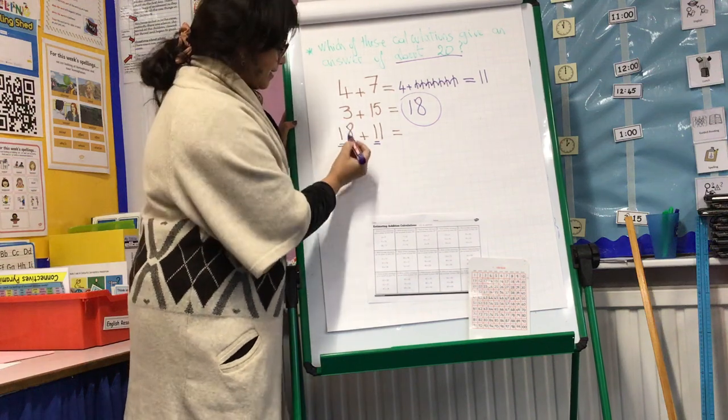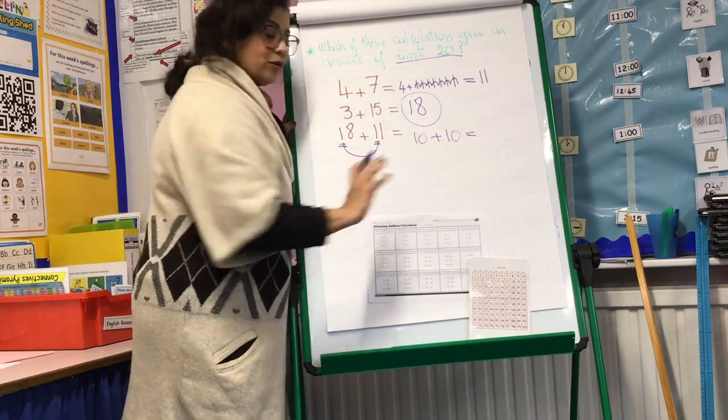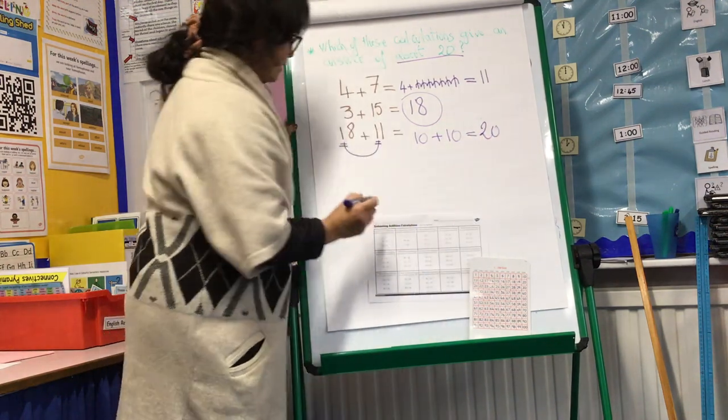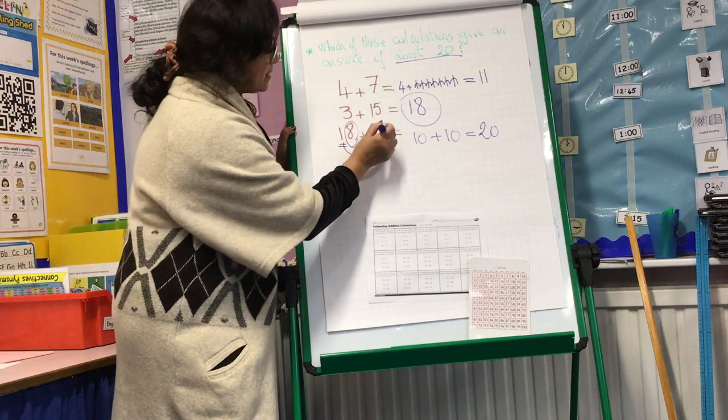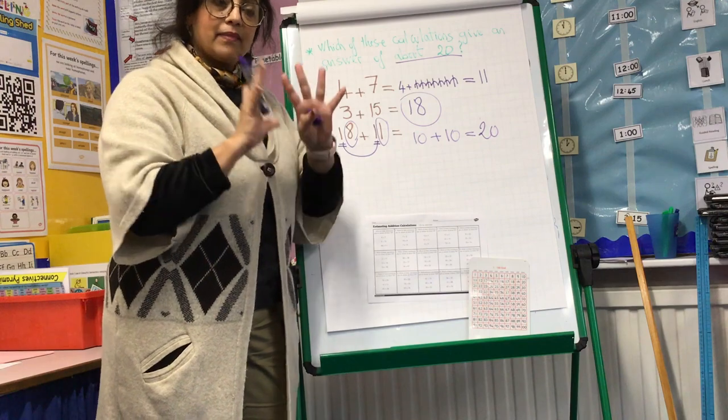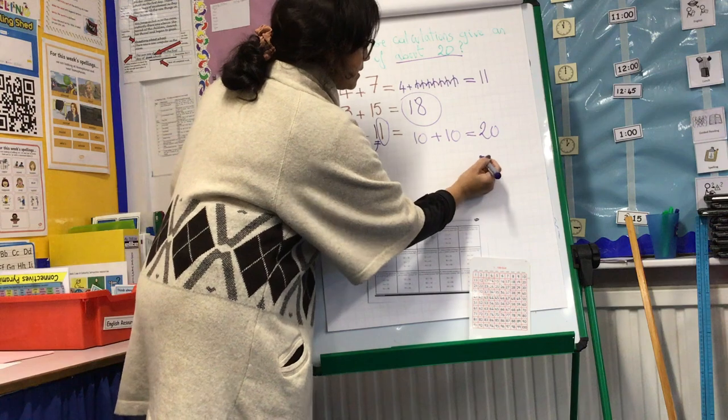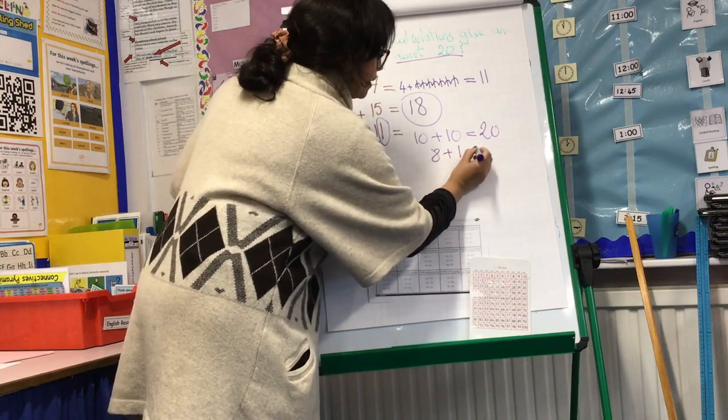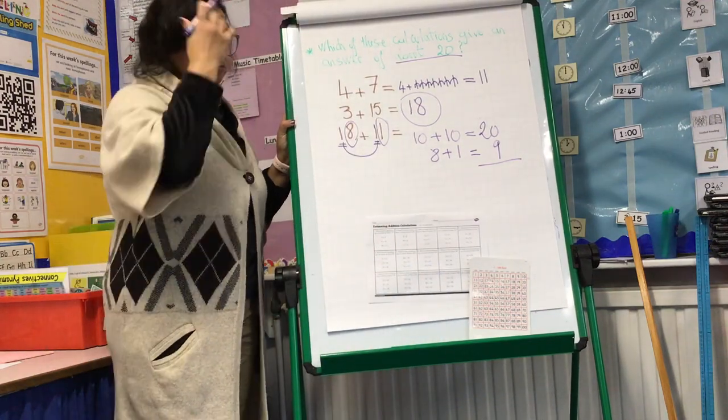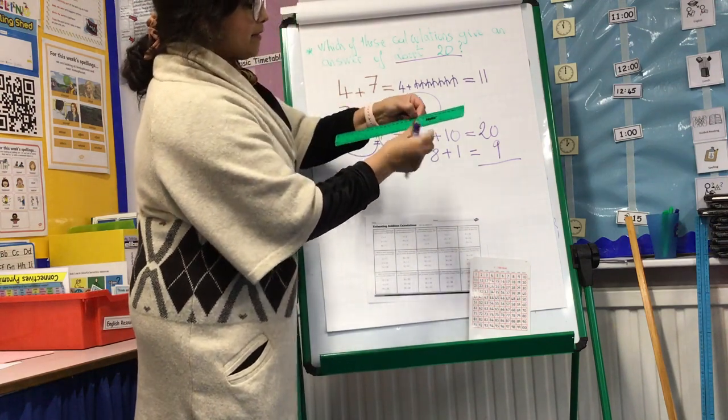You can either add 10 plus 10. You know that 10 plus 10 is 20. Then what do we have here left? We have the 8 and we have 1, so we add these together. 8 plus 1 is 9. So we have 20 and we have 8 plus 1 equals 9, so 20 plus 9.